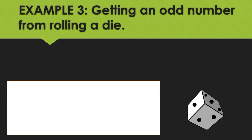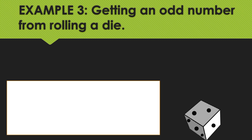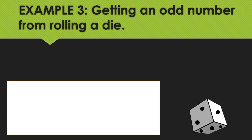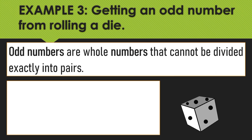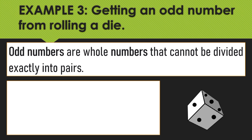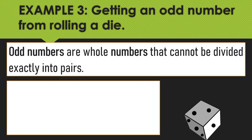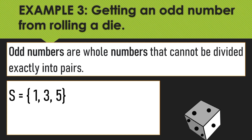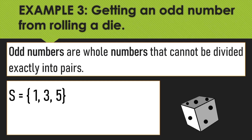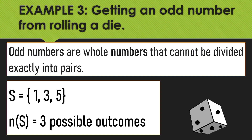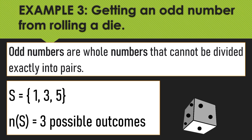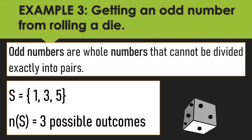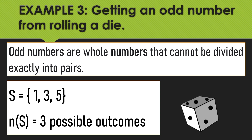Example number 3: what is the sample space and the total possible outcomes when you are tasked to get an odd number from rolling a die? Odd numbers are whole numbers that cannot be divided exactly into pairs. The odd numbers from rolling a die are 1, 3, and 5, since they can only be divided by themselves. So our sample space is {1, 3, 5} and the total possible outcomes is 3.